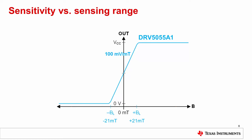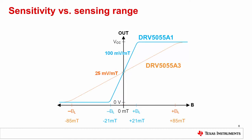The blue line shows the output behavior of DRV5055A1 with a sensitivity of 100 mV per mT and a linear sensing range of plus or minus 21 mT. The orange line shows the output behavior of DRV5055A3 with a sensitivity of 25 mV per mT and a linear sensing range of plus or minus 85 mT.